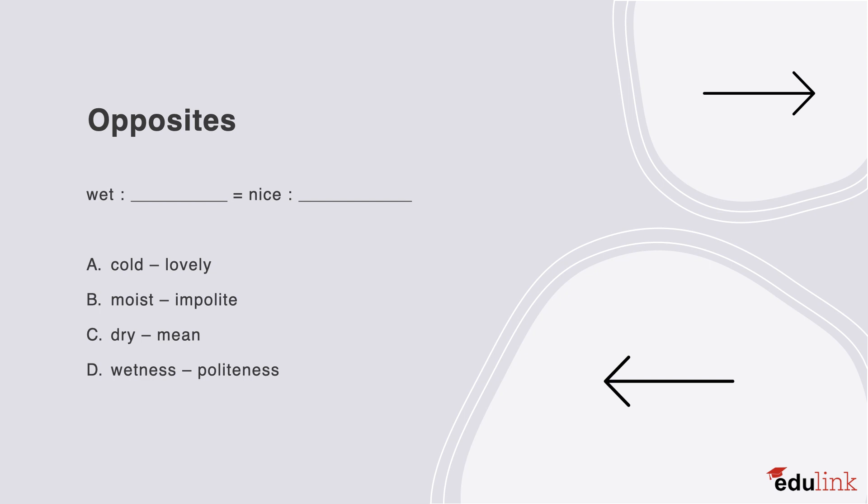Our first question is about the relation type of opposites. You can pause here to carefully go through the potential answers. The correct answer is C. Wet is the opposite of dry, and nice is the opposite of mean.